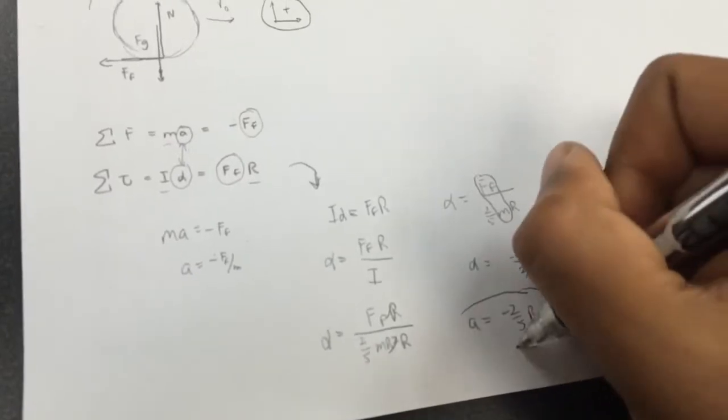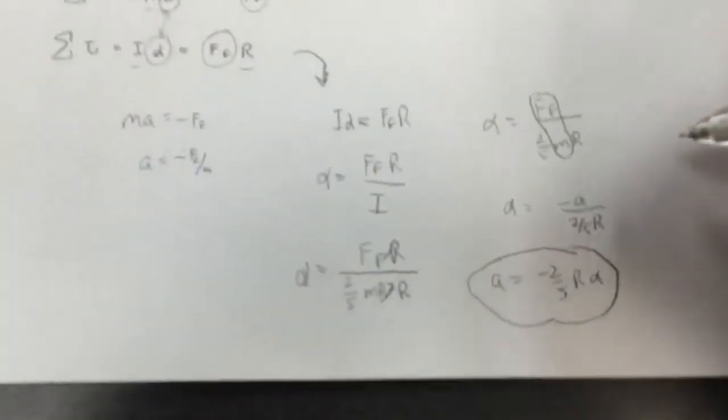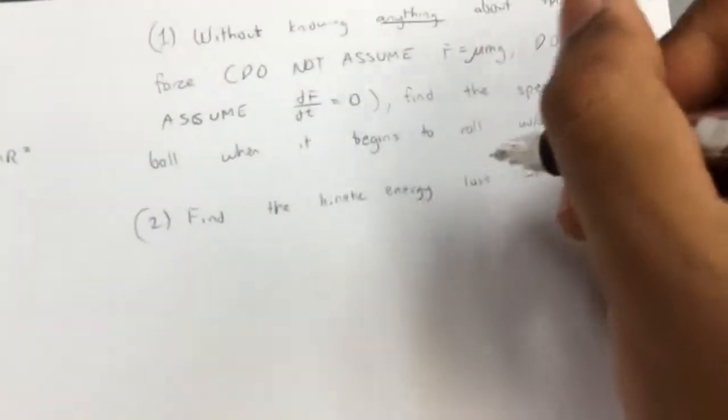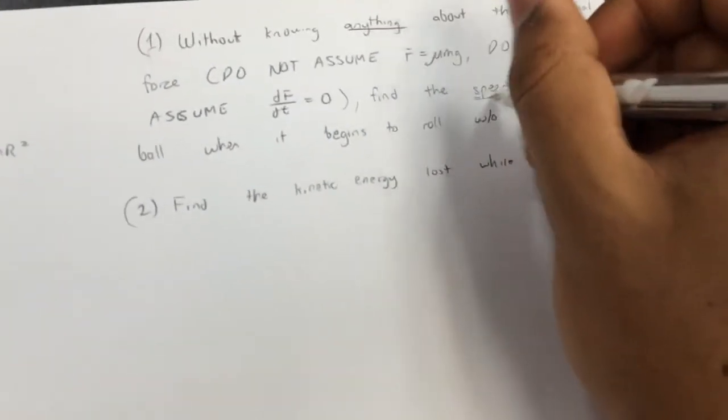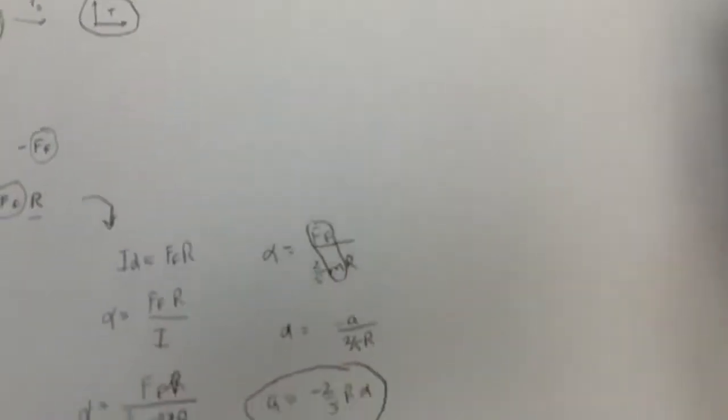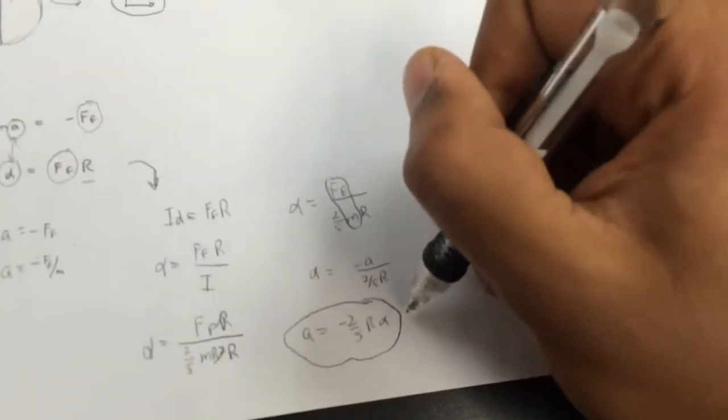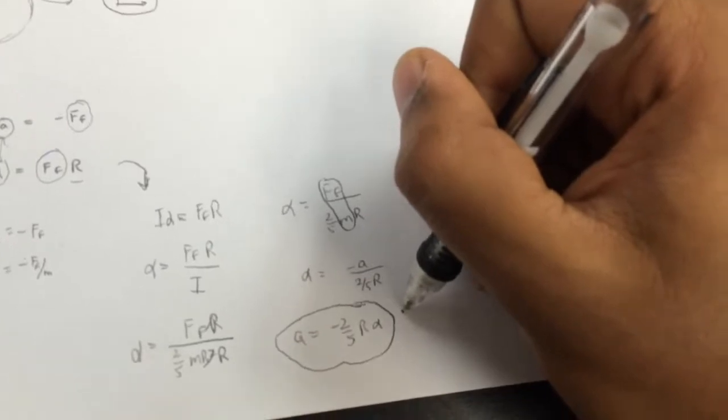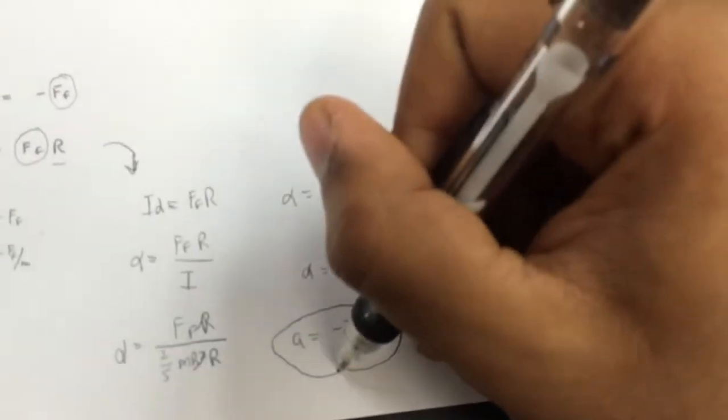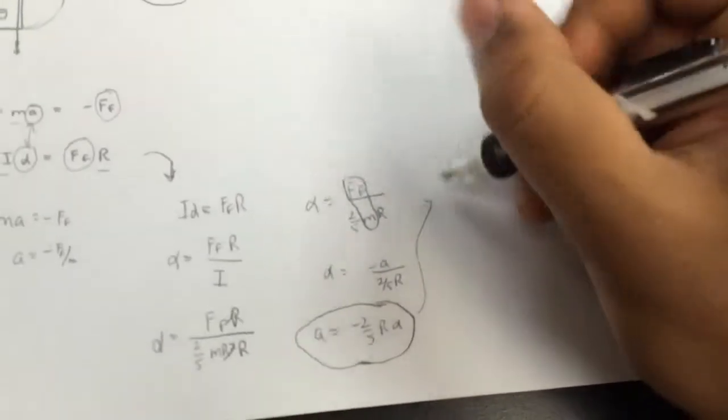So this is great. We have a relationship that relates the linear and angular accelerations. But what we're concerned with is finding the final velocity, or rather the speed, but the same thing, since it's only in one direction. We're concerned with finding the speed or the velocity when it begins to roll without slipping. So the only way I see in order to convert an equation involving accelerations to an equation involving velocities is to integrate both sides. Let's do just that.